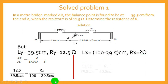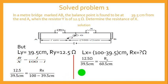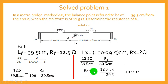Simplifying: 12.5 over 39.5 equals RX divided by 60.5. Cross-multiplying and making RX the subject of the formula, we get RX equals 12.5 times 60.5 divided by 39.5, which gives the final answer of approximately 19.15 ohms.